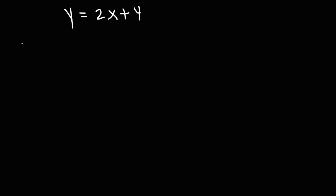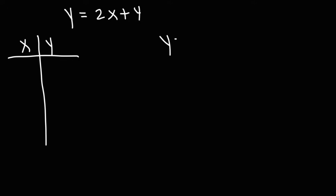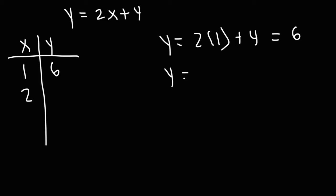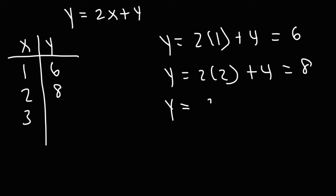Now let's talk about how we can make a function table. Let's say y is equal to 2x plus 4. If we plug in 1, or replace x with 1, we get y equal to 6. If we replace x with 2, we get a y value of 8. So for each different x value we get a different y value — that's an example of a function. When x is 3, y is 10.